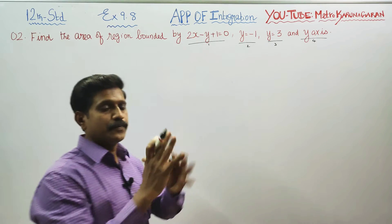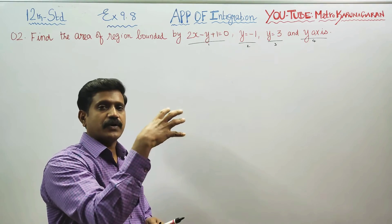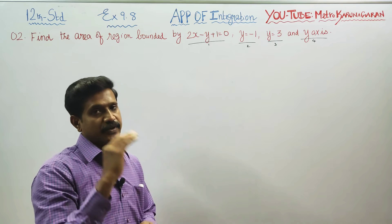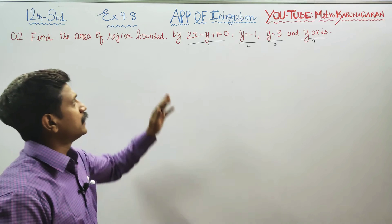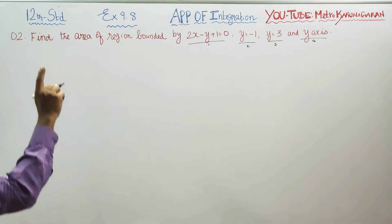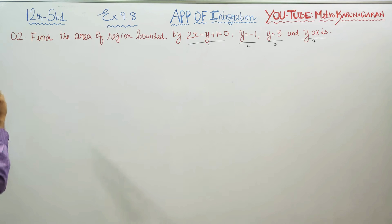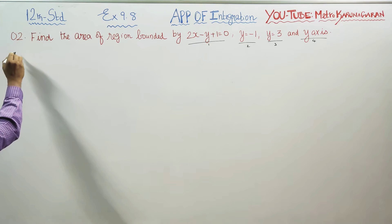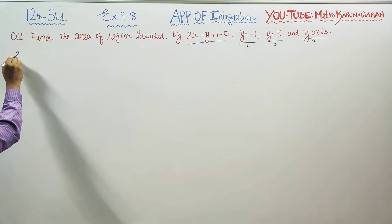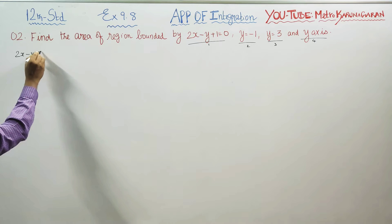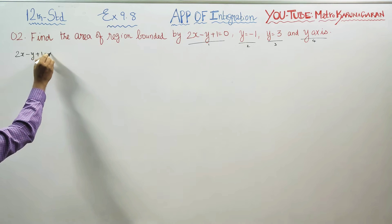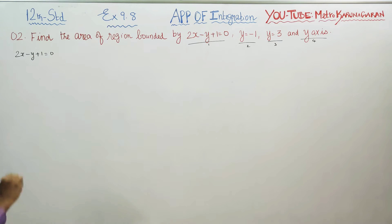The 4 boundaries are each set equal to 0, and we will find the same area. We go to the first equation — a straight line: 2x minus y plus 1 is equal to 0. We will trace this line.